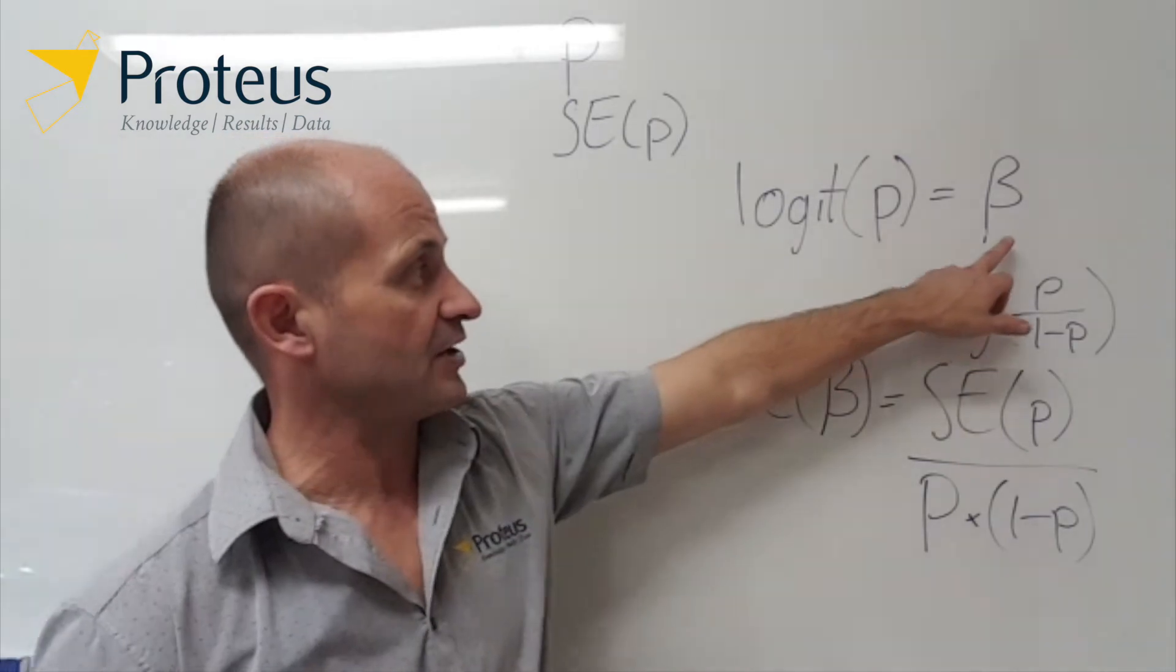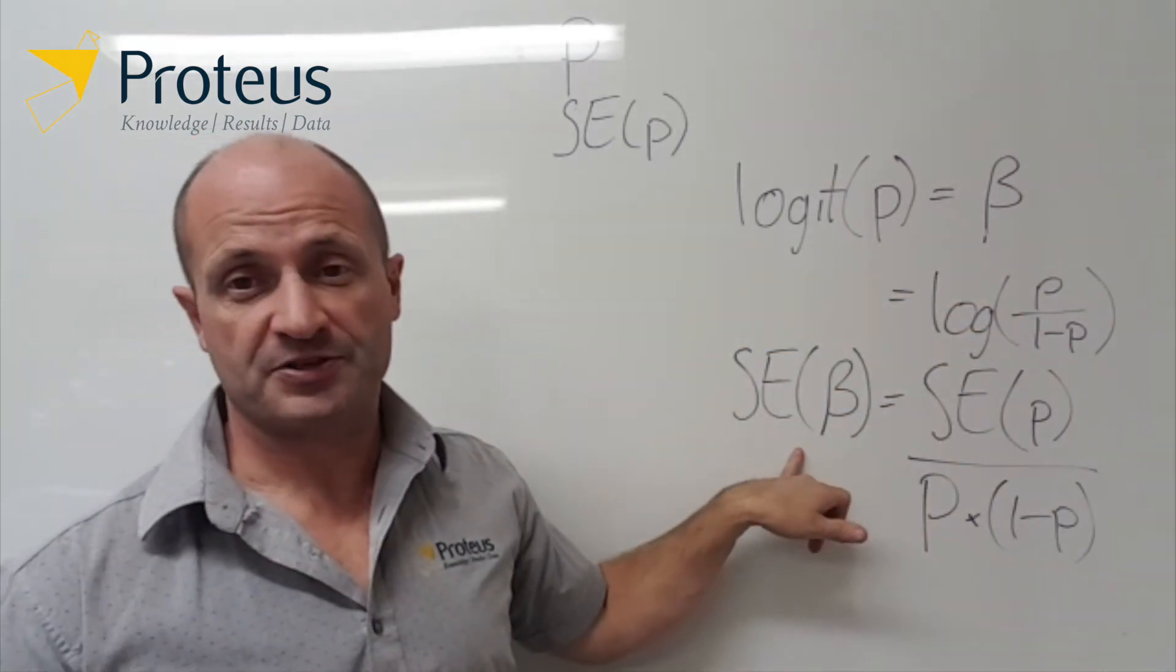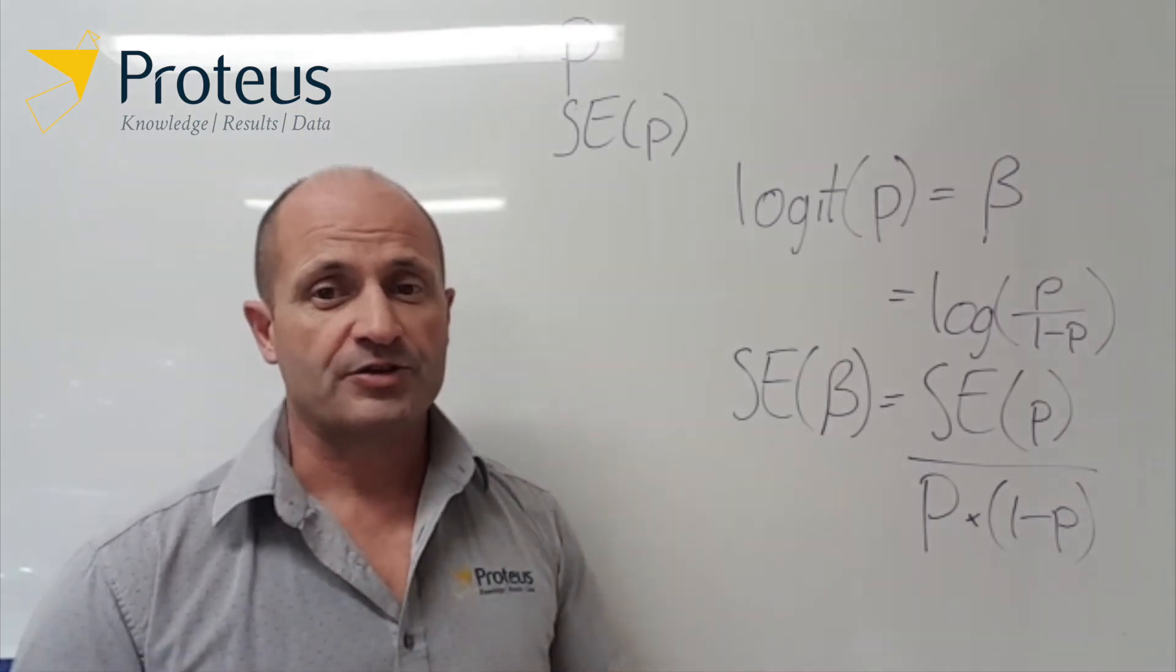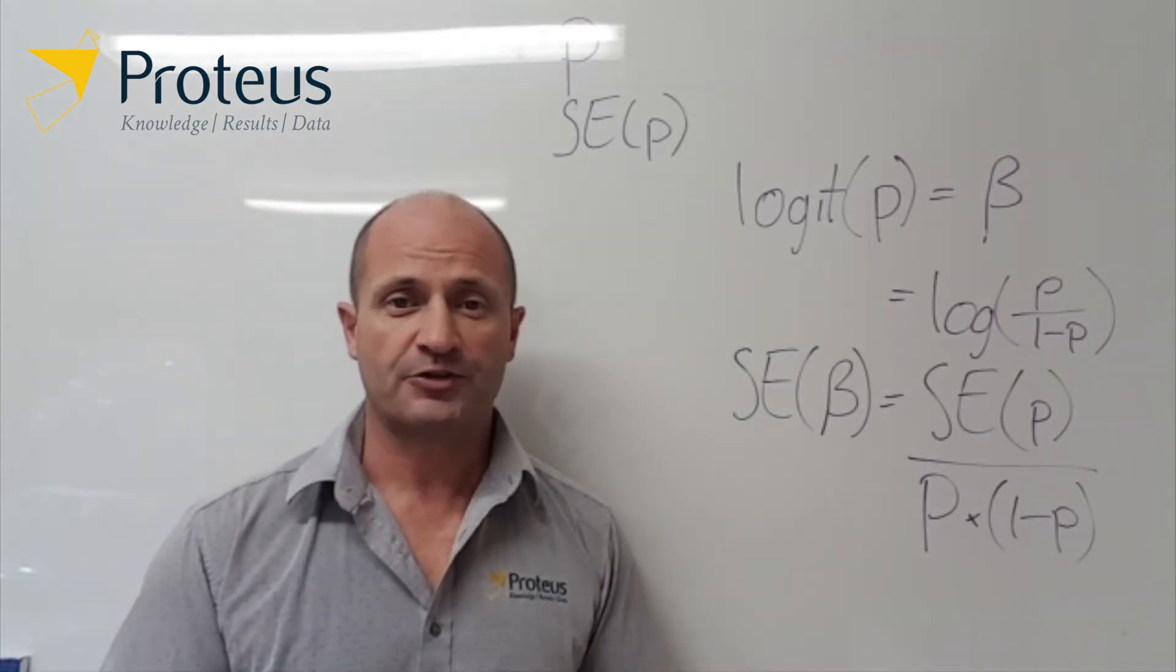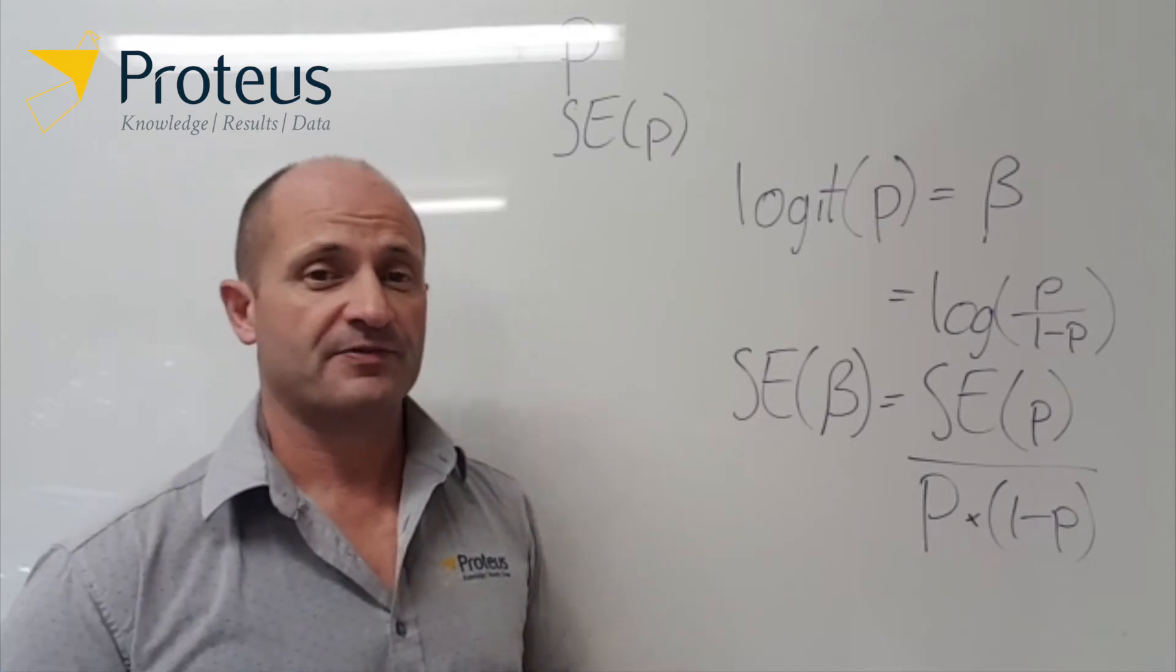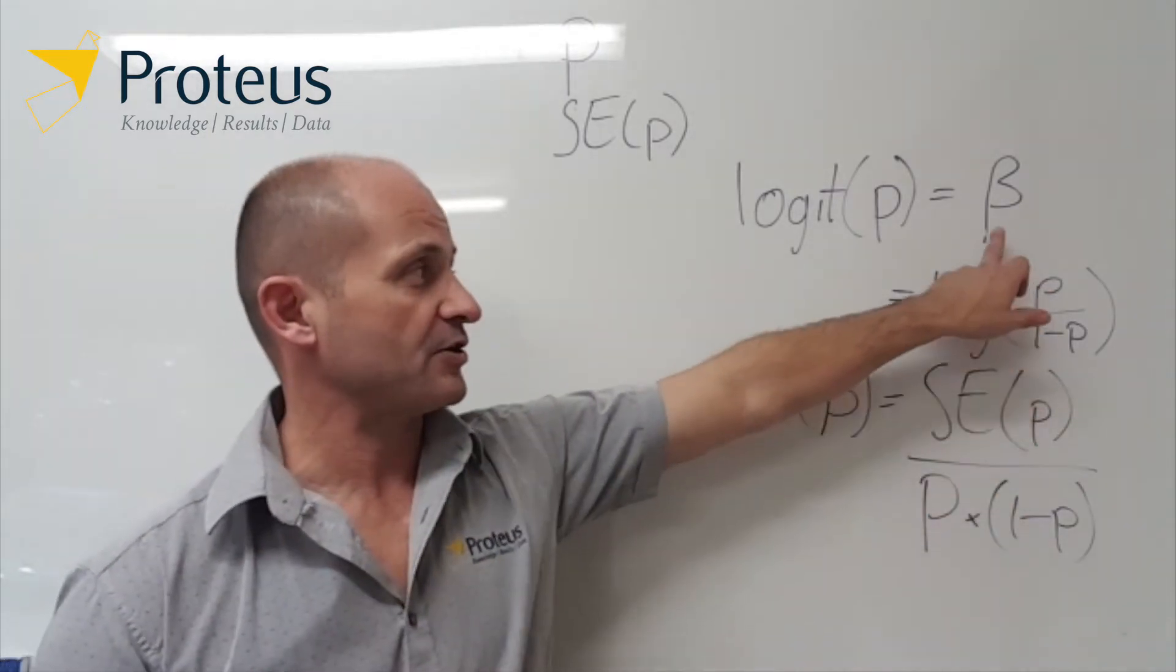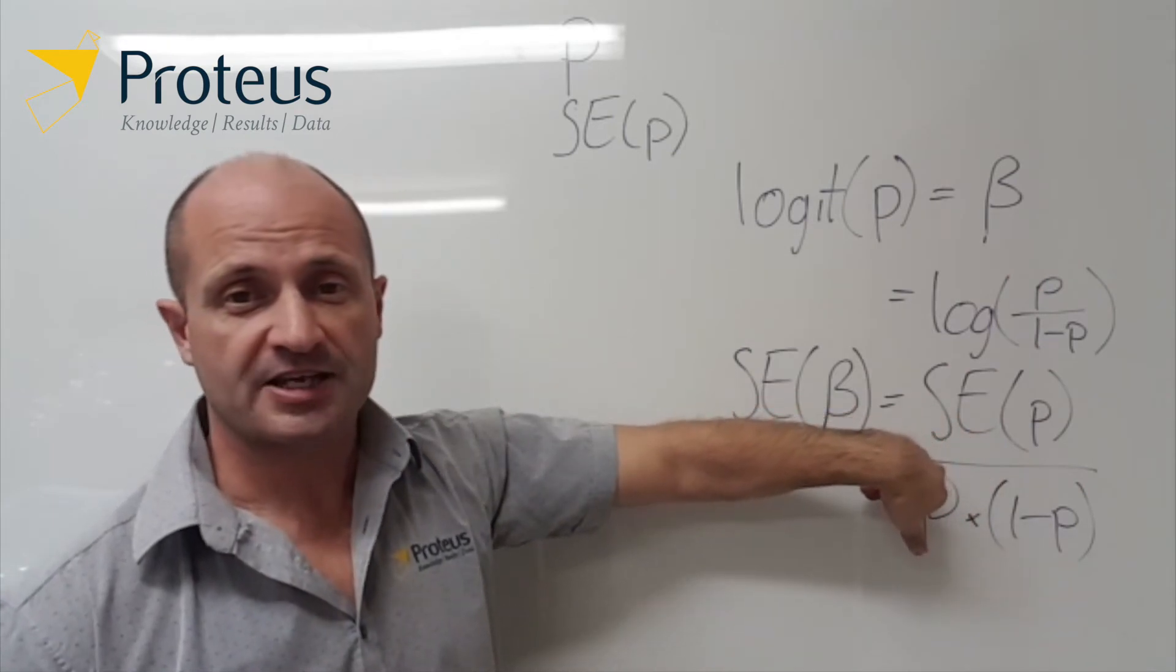So now we have the value for beta and we also have the value for the standard error of beta on the logit scale. Now we might do that because we want to calculate some confidence intervals, for example, and now that we've got the values on the logit scale...